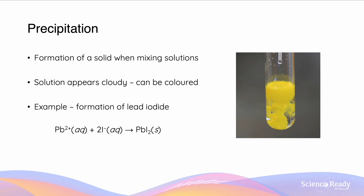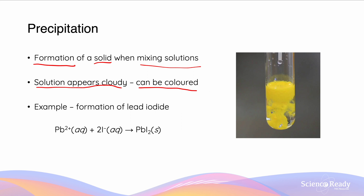As we discussed in the physical and chemical change video, precipitation is the formation of a solid when mixing solutions, and it is an indicator of a chemical reaction. The solution will appear to be cloudy and it can be coloured, which in this case is yellow. The example here on the right is a reaction between lead ions and iodide ions to form the yellow substance lead iodide.